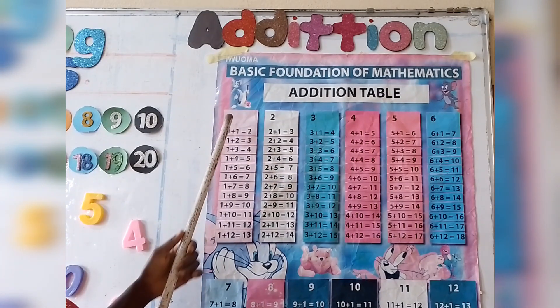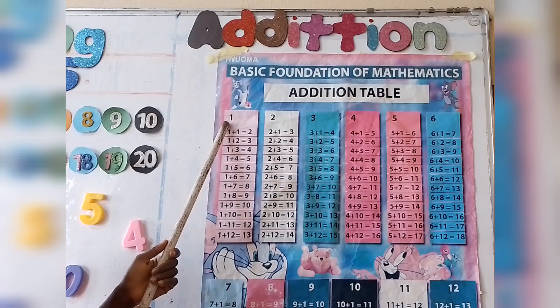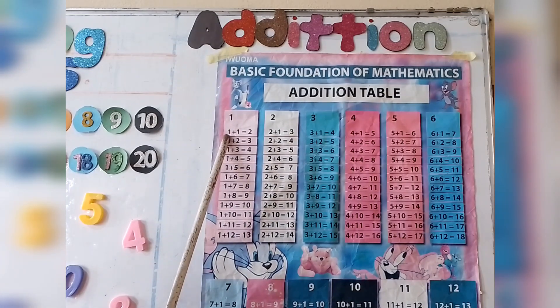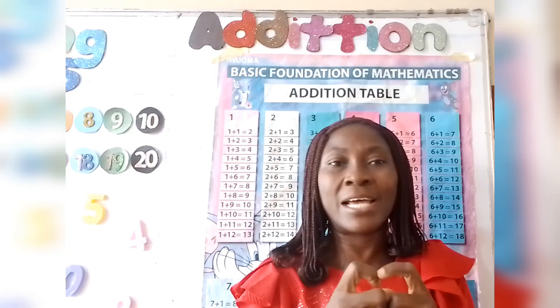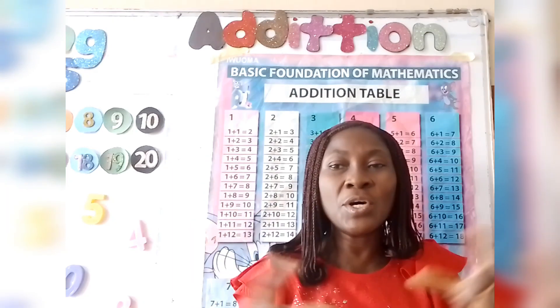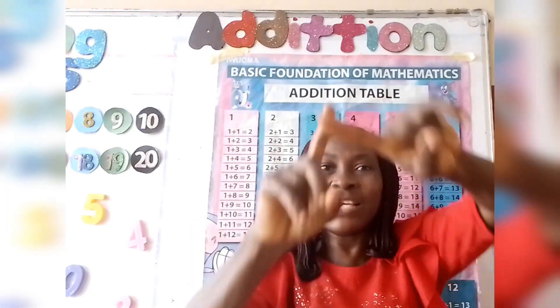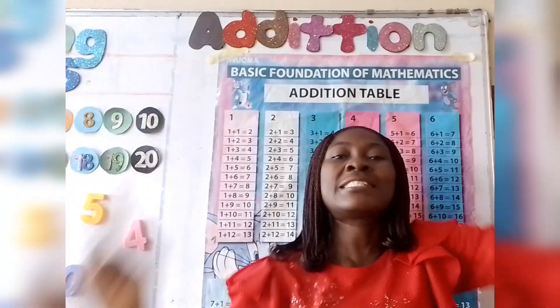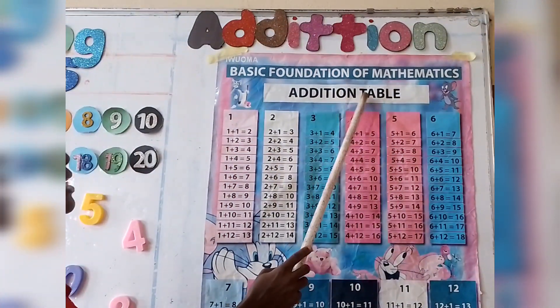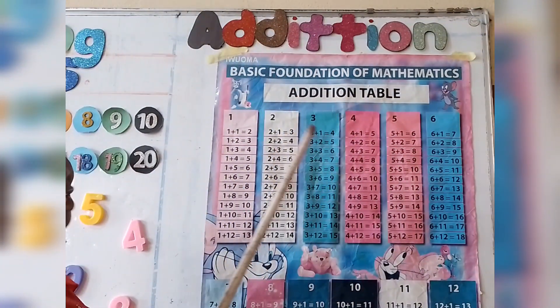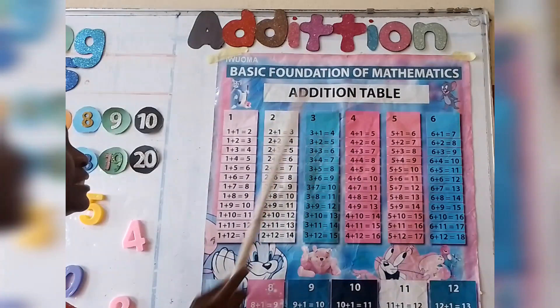Addition table for number one. Now look at the first table. One plus one equals two. Remember the last time we learned addition — we said addition means putting things together. The sign of addition is plus.